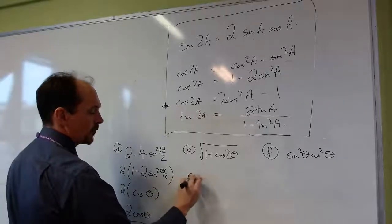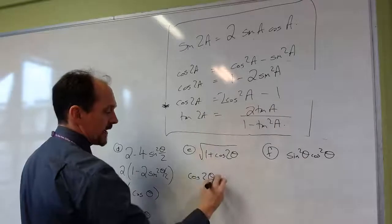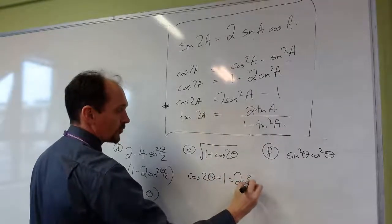So if I write this formula, cos 2 theta, and I'm going to add 1 to that side, that will equal 2 cos squared theta.